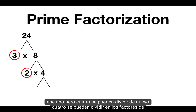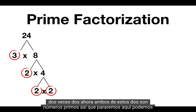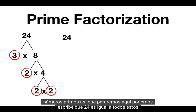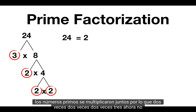4 can be split into the factors of 2 times 2. Now both of these 2s are prime numbers, so we'll stop here. We can write that 24 is equal to all of these prime numbers multiplied together: 2 times 2 times 2 times 3.